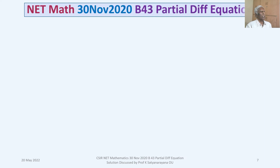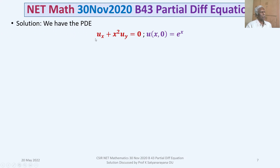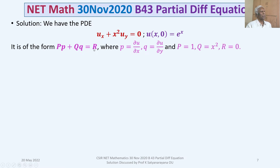For the given PDE u_x + x² u_y = 0 with u(x, 0) = e^x, u is the dependent variable and x, y are independent variables. It is of the form Pp + Qq = R where p = ∂u/∂x, q = ∂u/∂y, capital P = 1 (coefficient of ∂u/∂x), capital Q = x², and capital R = 0.